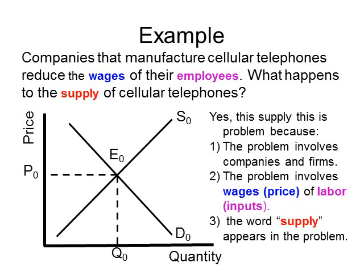This is a supply problem because, first, the problem involves companies and firms. Second, it involves wages — the price of labor or inputs — which is one of the things that cause the supply curve to shift. Third, if nothing else, the word 'supply' in the problem gives away that this is a supply problem.